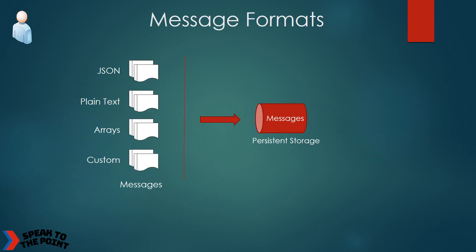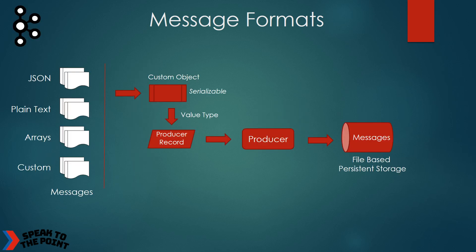The message formats generated by these events are not unique — each event type has a different message format. Some are JSON objects, others are plain text, and some are in the form of an array. The solution needs to support multiple message formats. You can pass your custom object as a value type to the producer record. If you can represent the source message as a serializable object, you can use Kafka to store any message format.